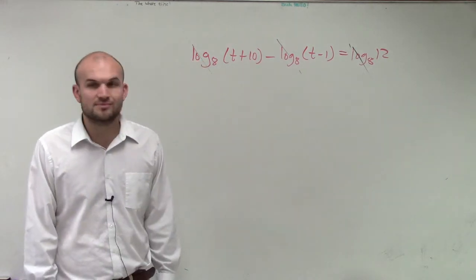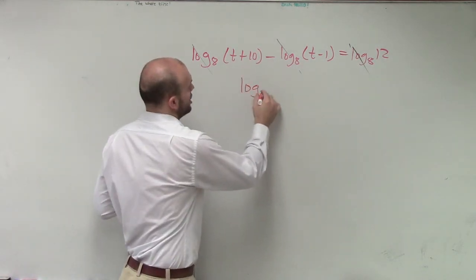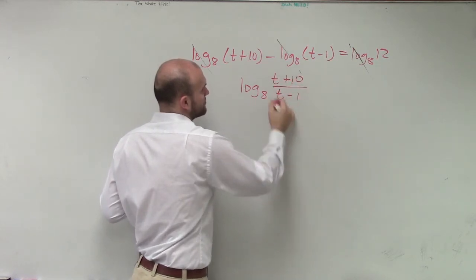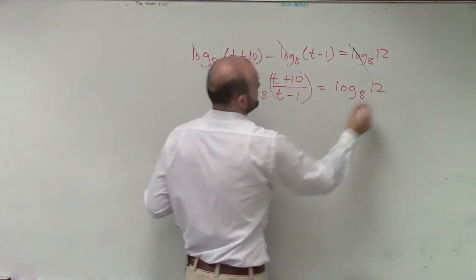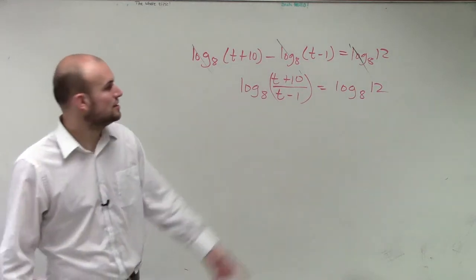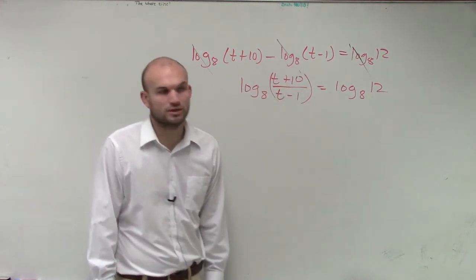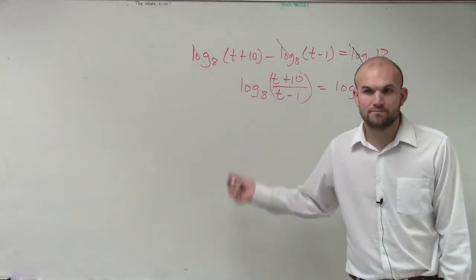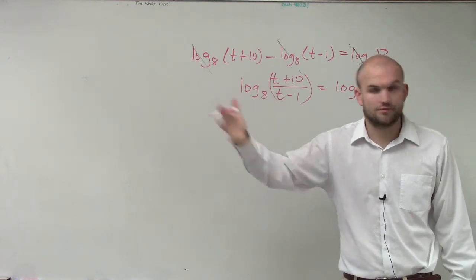This states I can rewrite this as log base 8 of (t plus 10) divided by (t minus 1) equals log base 8 of 12. That is called the quotient property. It allows us to rewrite the subtraction of two logs with the same base as the logarithm of a quotient. That's the quotient property of logarithms. We wrote down all three properties, right Anna?